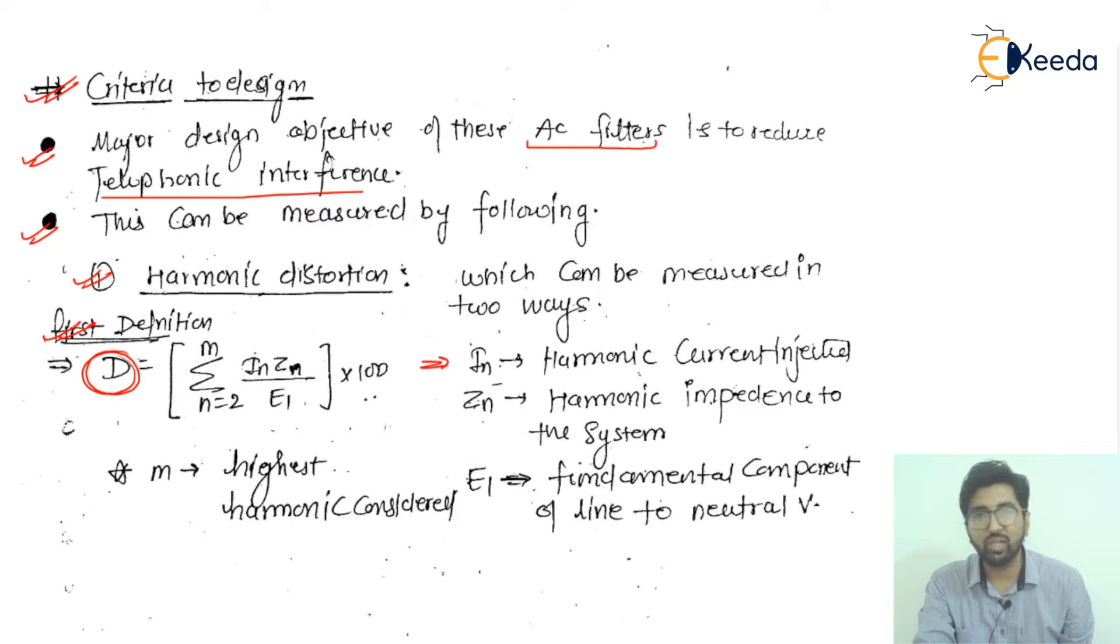Zn is the harmonic impedance to the system, and E1 is the fundamental component of line-to-neutral voltage, the phase voltage. In is the harmonic current, Zn is harmonic impedance, and E1 is the fundamental component of phase voltage. M is the highest harmonic considered, which is around 49 or 50.